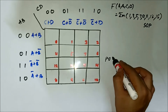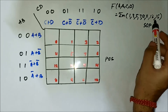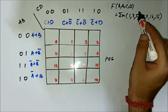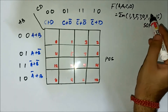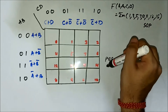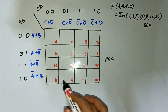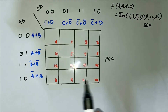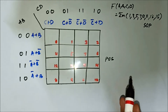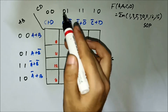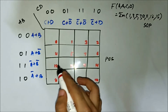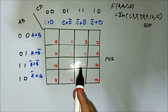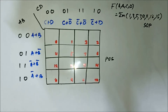We have the SOP expression for a four-variable expression given in terms of minterm values, and we have the POS KMAP format for a four-variable expression. We will map it, form groups, and identify the common variables.